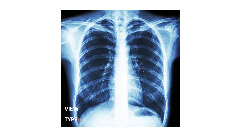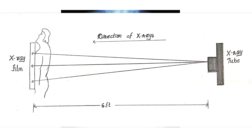The second is the view. The view taken for this X-ray is a posterior-anterior view. The standard view for the X-ray thorax or X-ray chest is a posterior-anterior view, in which the patient stands with their anterior part of the chest against the X-ray film and the X-ray tube is placed six feet behind the patient.